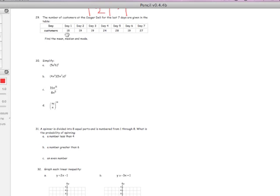So number 29, the number of customers at the Cougar Deli for the last seven days are given here. Find the mean, median, and mode. Let's do this in the order I feel like doing. Mode is most often, and just scanning these, you can see there's three 19s, so the mode is 19.